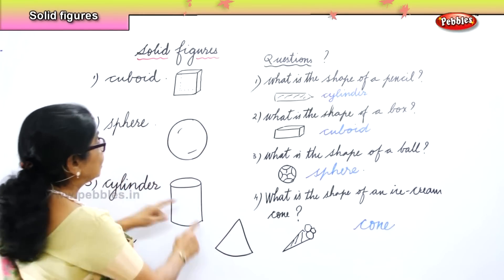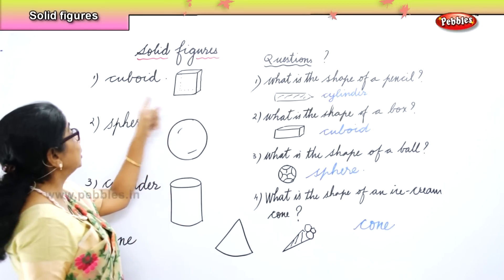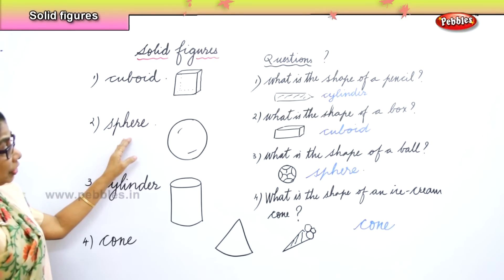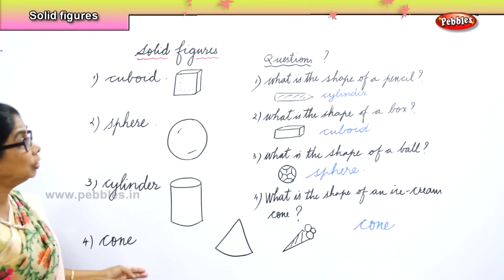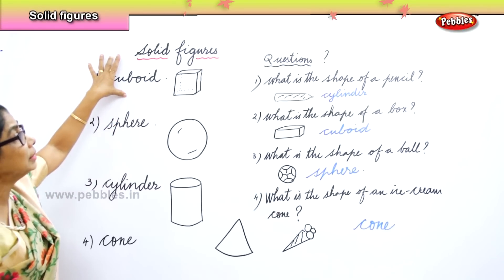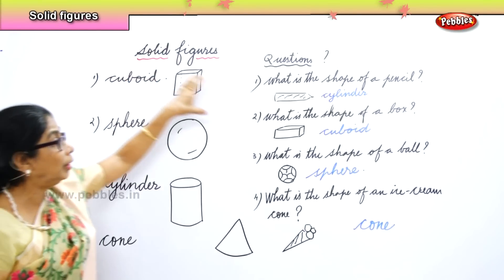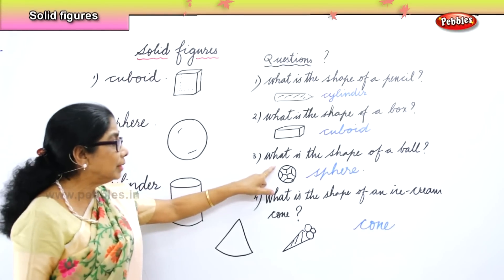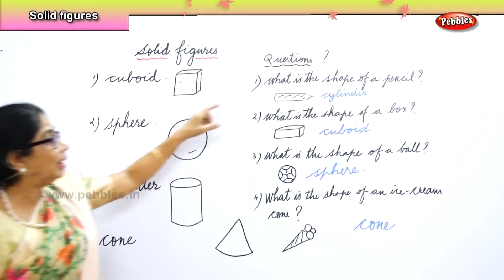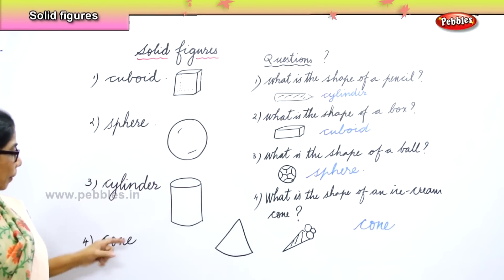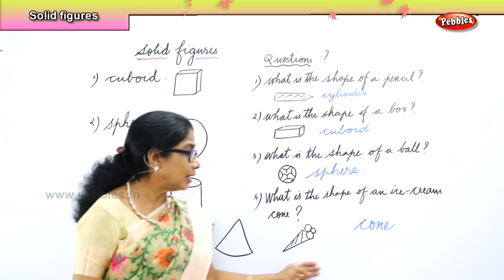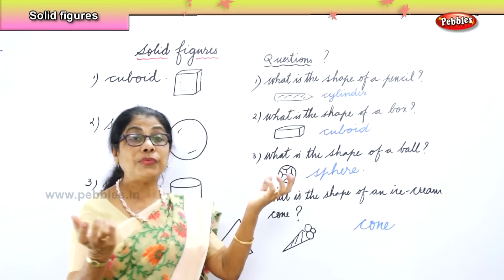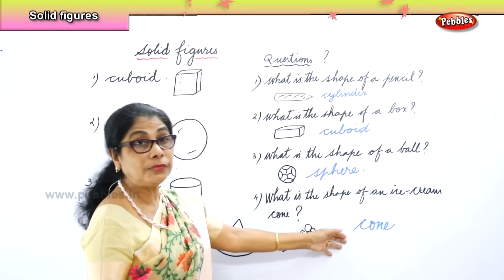So, what is the shape of a pencil? It is cylindrical. A box is cuboid. A ball is sphere shape. An ice cream cone is cone shape. So we learnt four solid figures: cuboid — example is a box; sphere — example is a ball or football; cylinder — example is a pencil or your pen; cone — example is an ice cream cone. And we learnt where to find solid figures in each of these items.